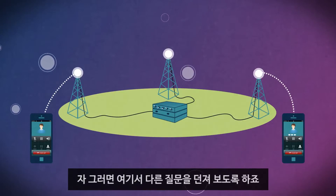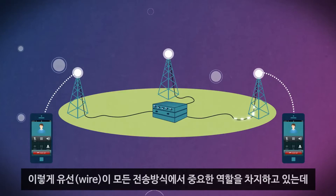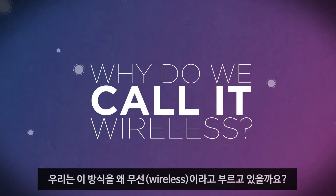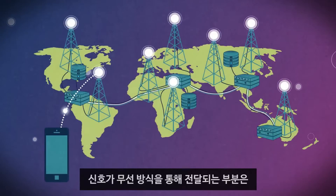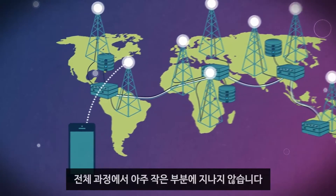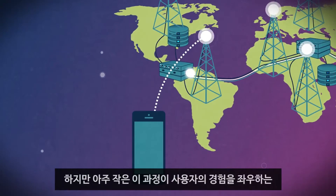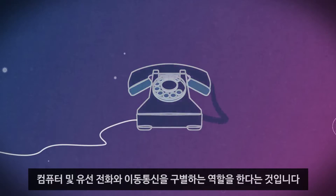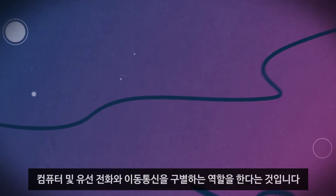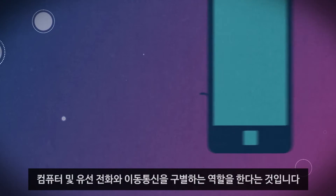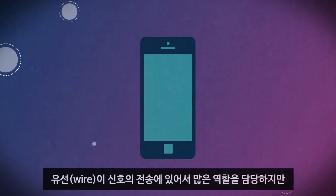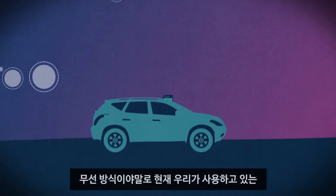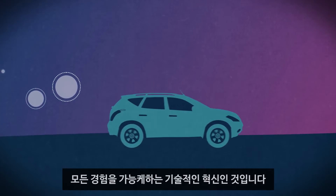So here's another question: if so much of wireless communication involves wires, then why do we call it wireless? The signal might only be wireless for the tiniest leg of its journey, but that part has the absolute biggest impact on our user experience. It's the difference between being tied to a computer or landline phone and true mobile communications. Wires carry the signal most of the way, but it's the technological breakthroughs of wireless technology that give us our freedom.